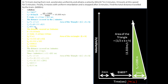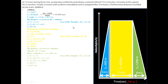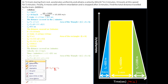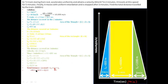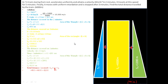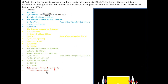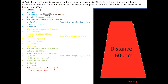The total displacement is S1 + S2 + S3 = 800 + 4000 + 1200 = 6000 meters. That is our required answer.